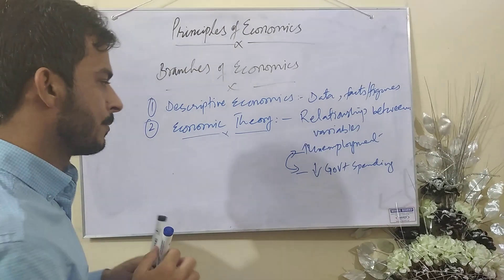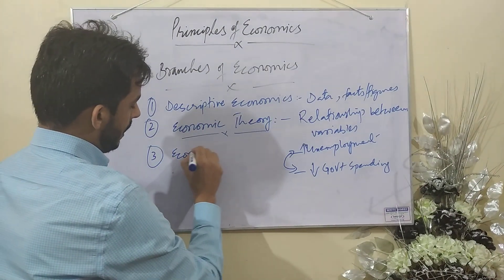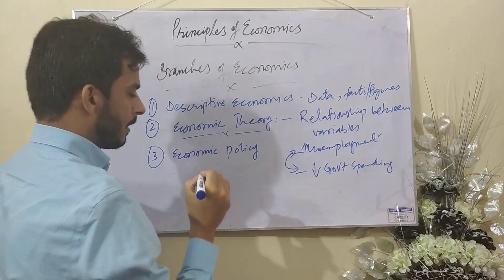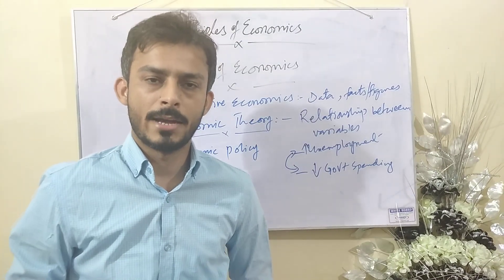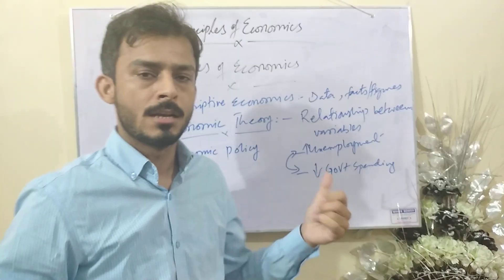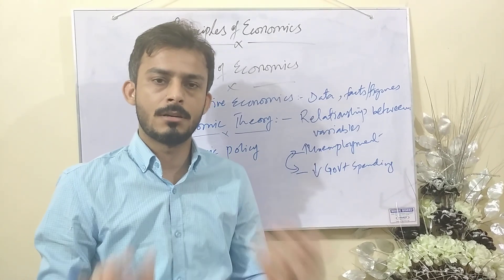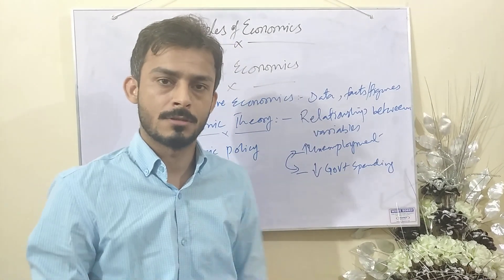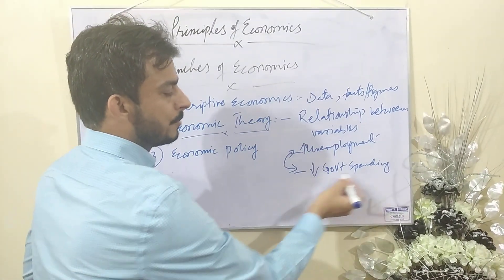The third branch is economic policy, also called policy economics. Now that we have identified the problem, we need a solution. Policy economics or economic policy — this third branch, stage, or level of economics — gives us the solution to the problem. For example, unemployment was caused by less government spending.